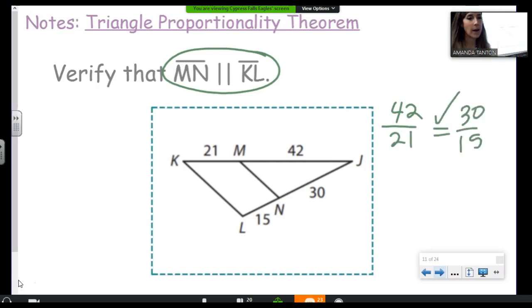We would show 42 is to 21 as 30 is to 15. There's a lot of ways to show that's true. You can reduce both sides. Oh, 2 equals 2, yay. Or you can cross-multiply. Verify just means mathematically show that it's true. Now that I know that the pieces are proportional, now I can add arrows showing that they are parallel.